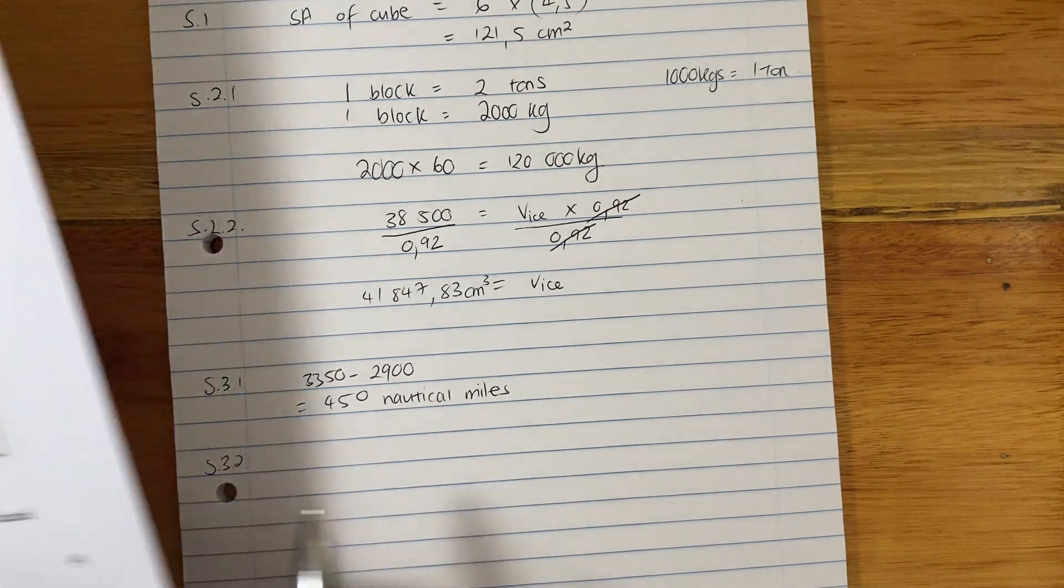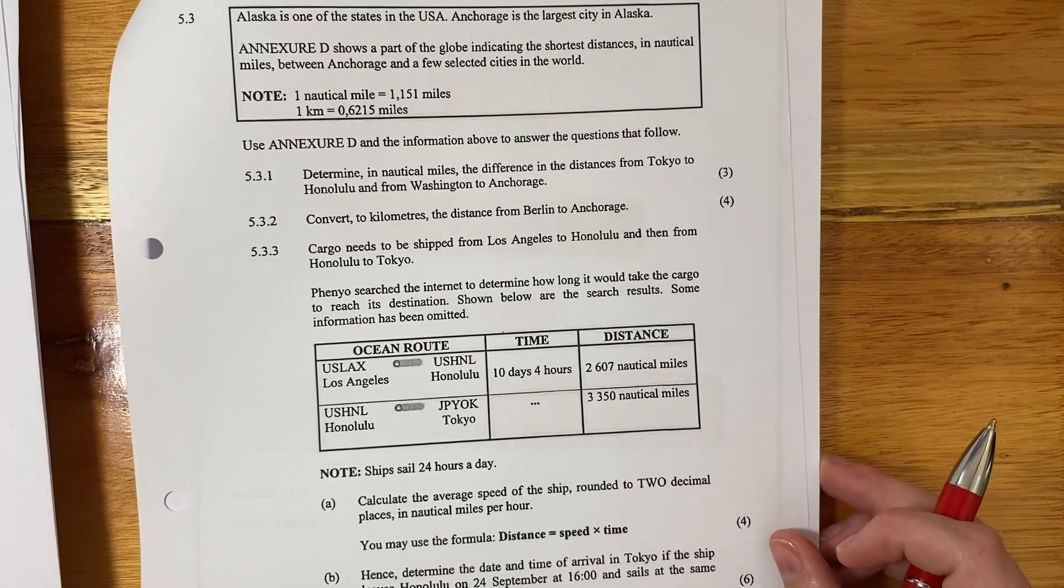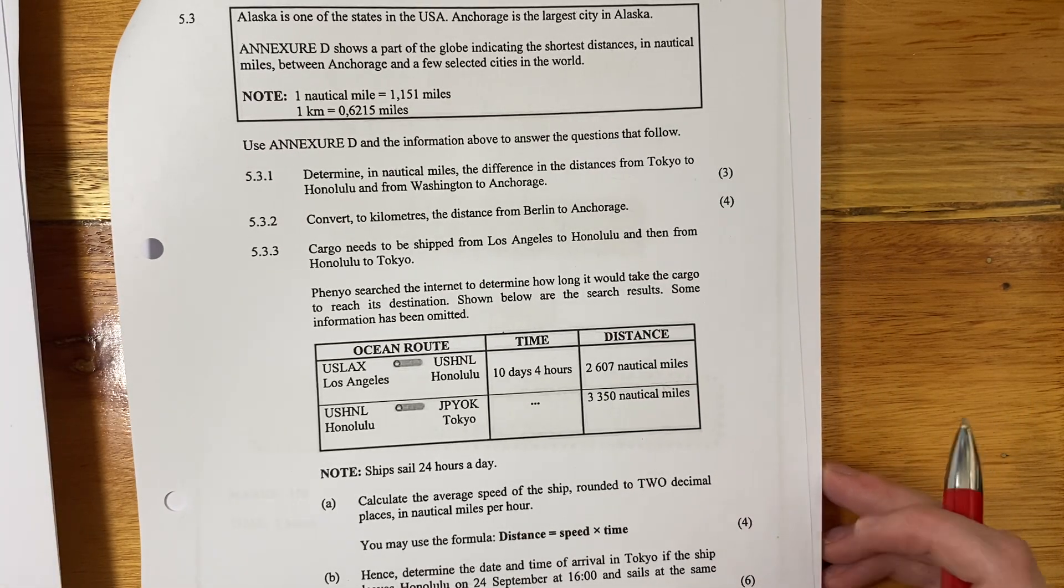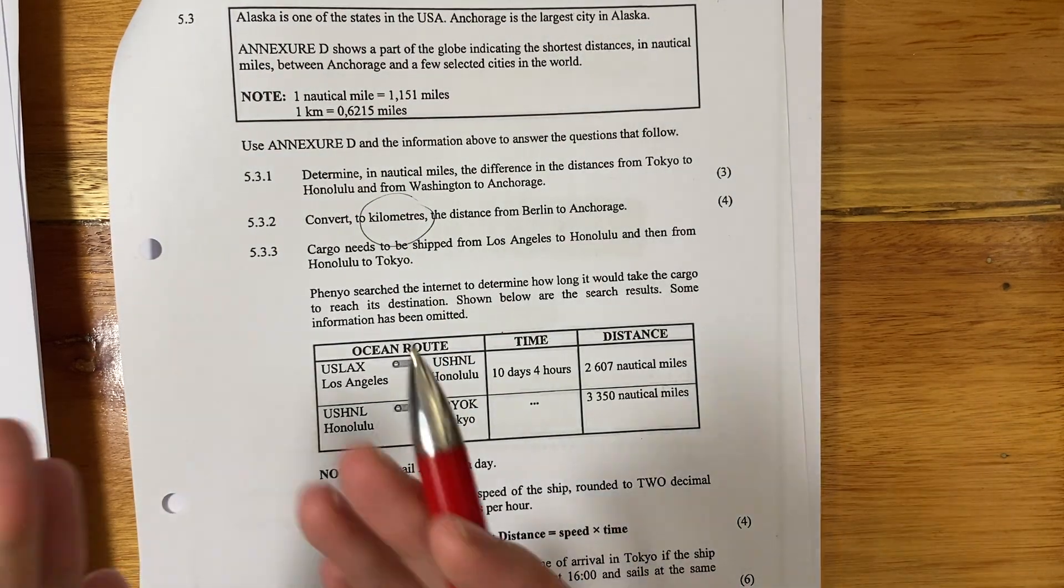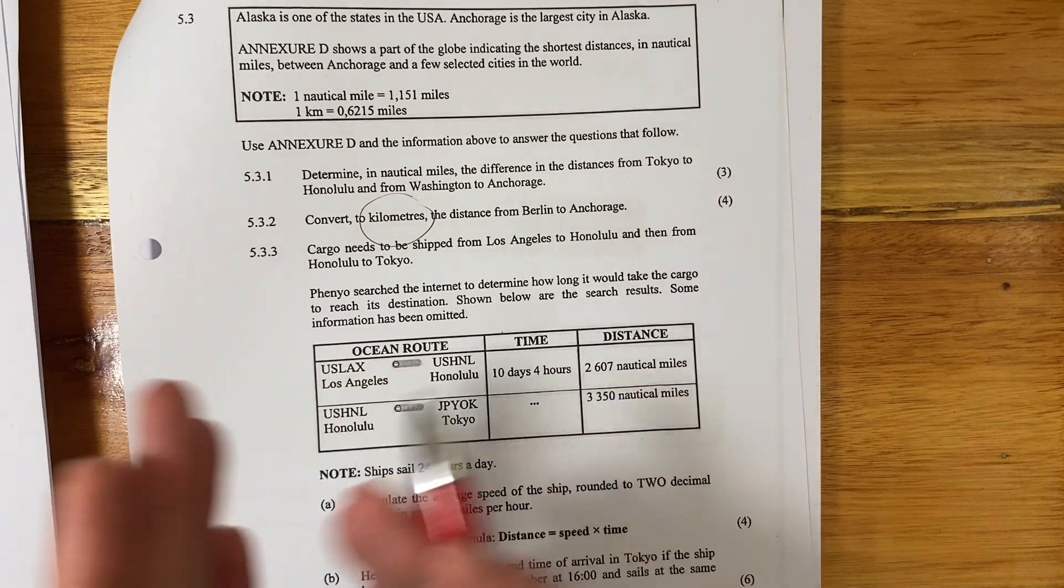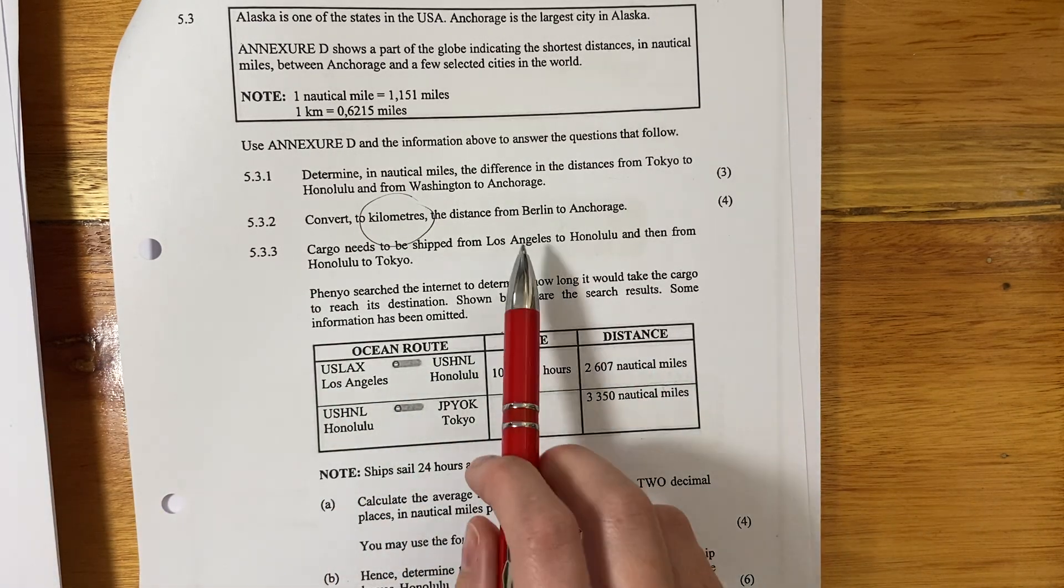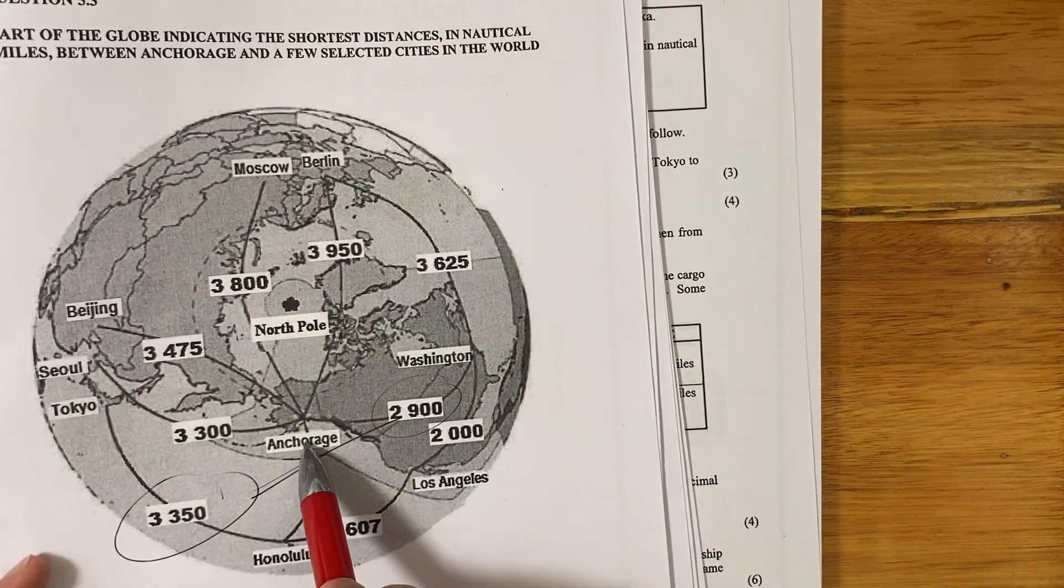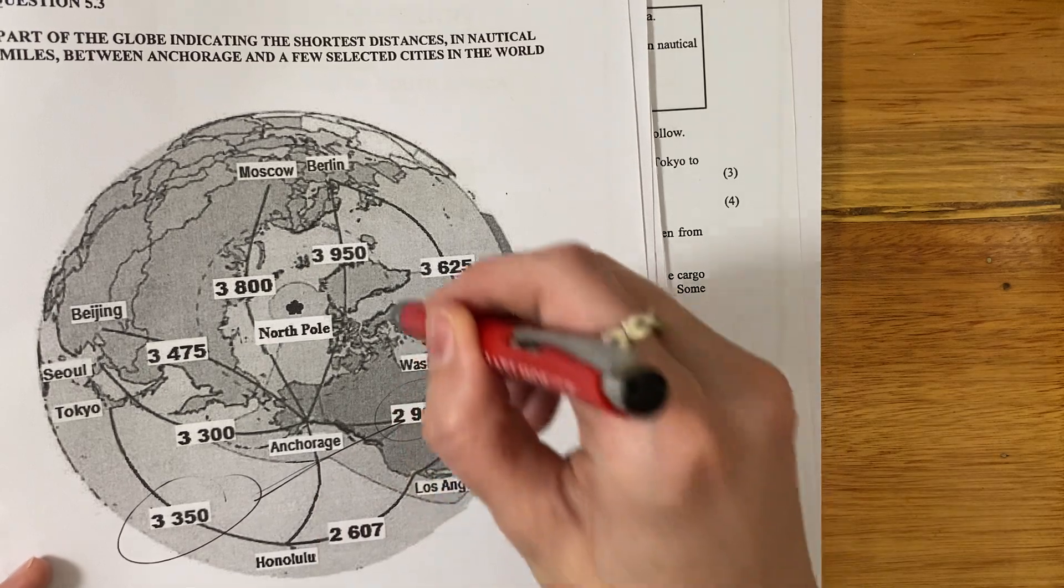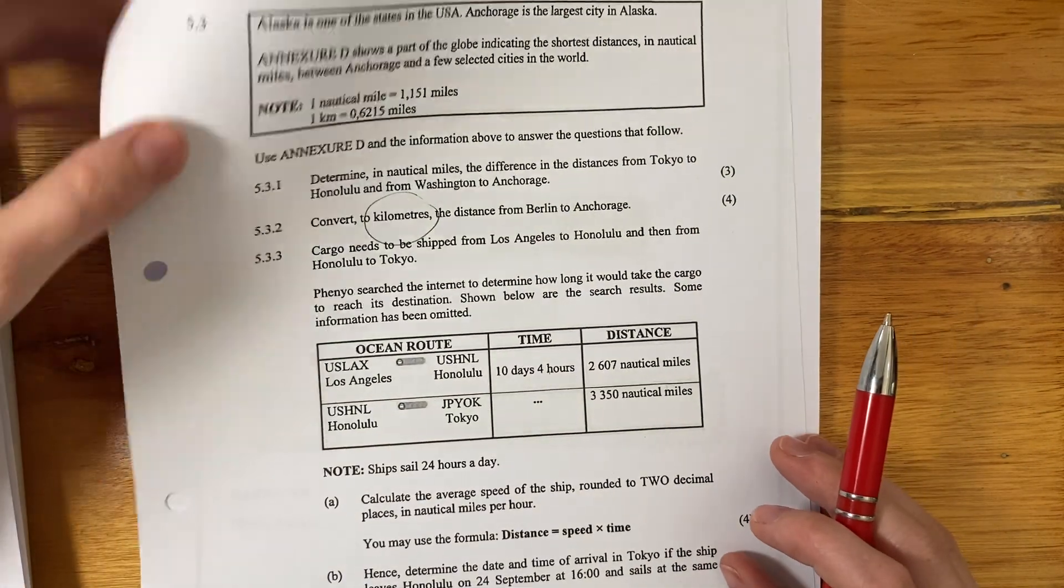Let's look at the next question. We knew it was coming. Convert to kilometers, right? The distance from Berlin to Anchorage. So we're going to have to go from nautical miles to miles and then to kilometers. So we're going to be doing the most. But first thing we're going to do is we're going to find the distance from Berlin to Anchorage. Here's Anchorage. Where's Berlin? There's Berlin. So it's 3950. That's what we start with.